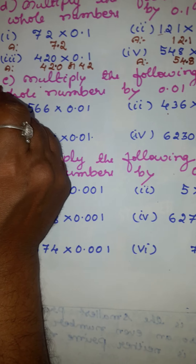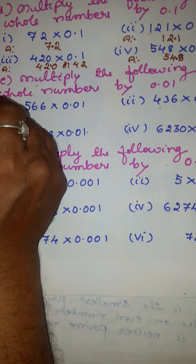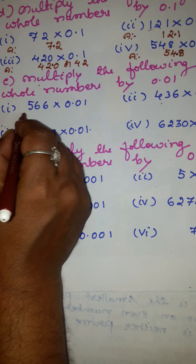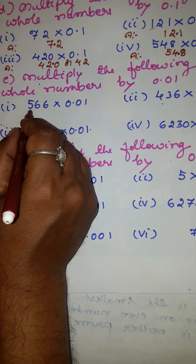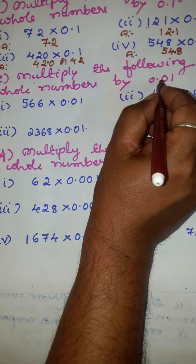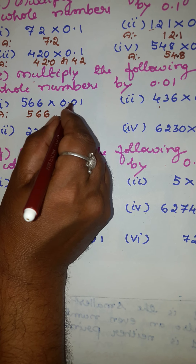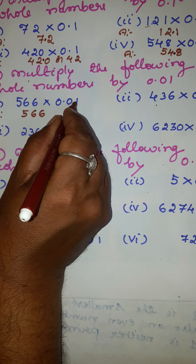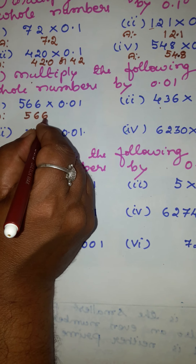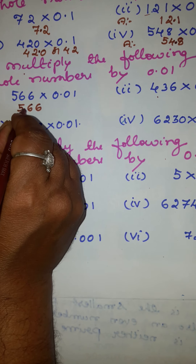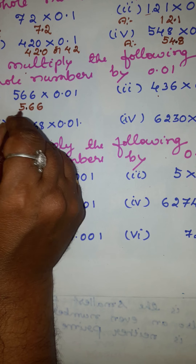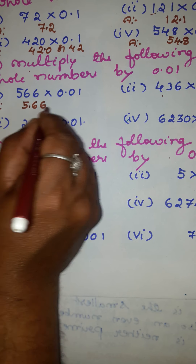Now let us move to the next section, where we are going to multiply whole numbers by 0.01. Write 566 as it is. After the decimal there are two places, so here you move two places from right to left. Put the point — the answer is 5.66.